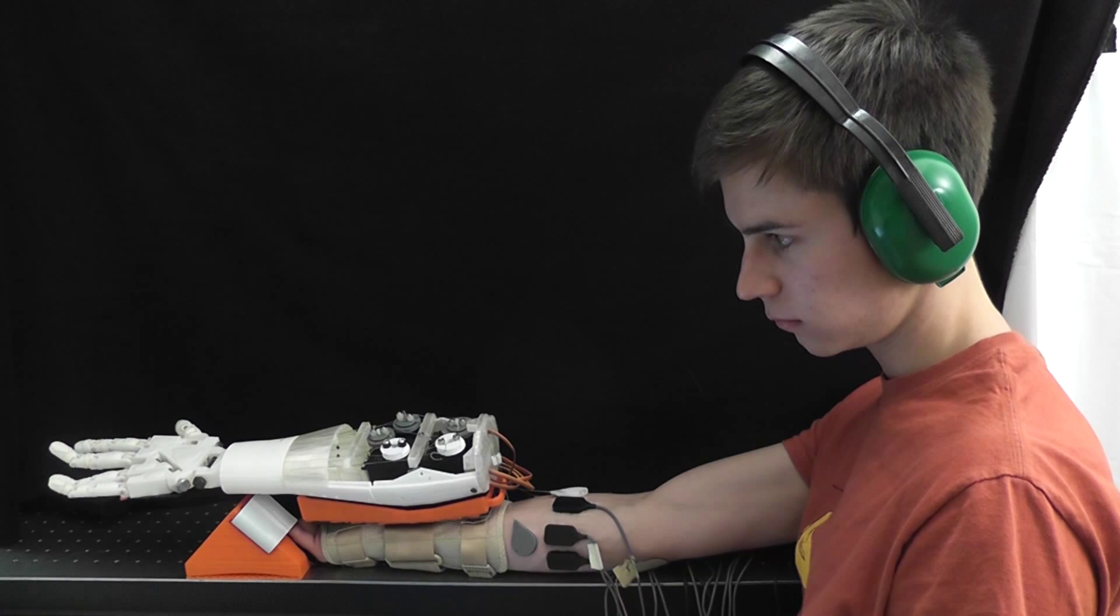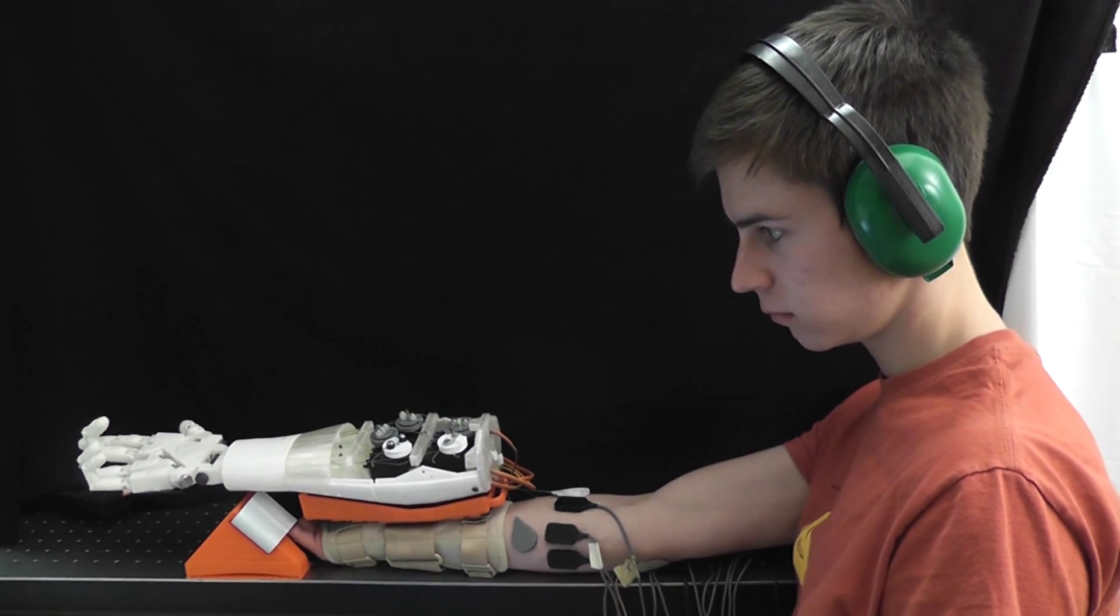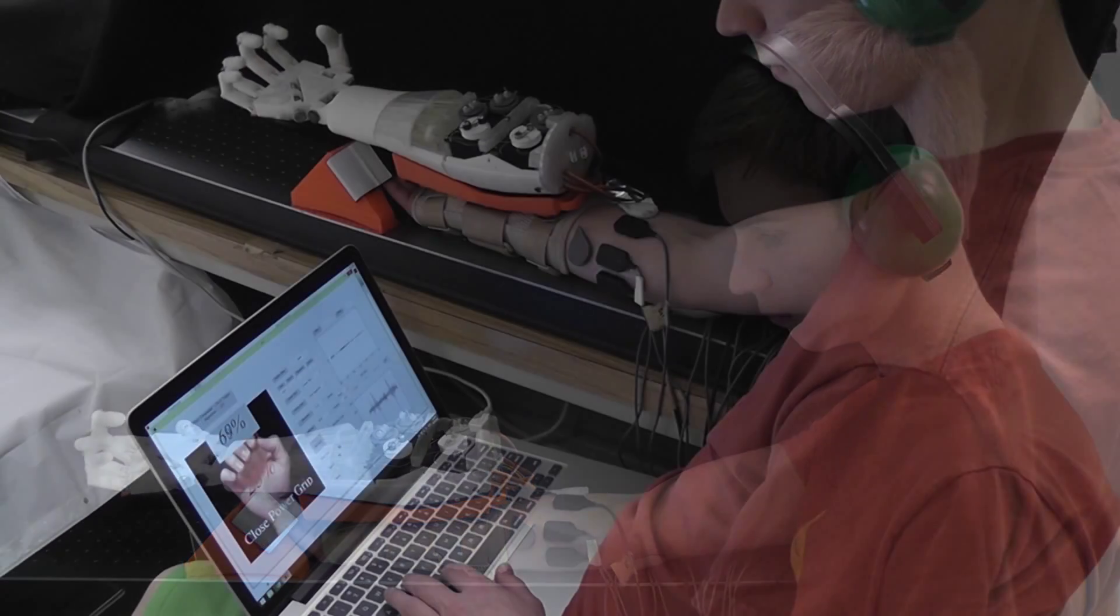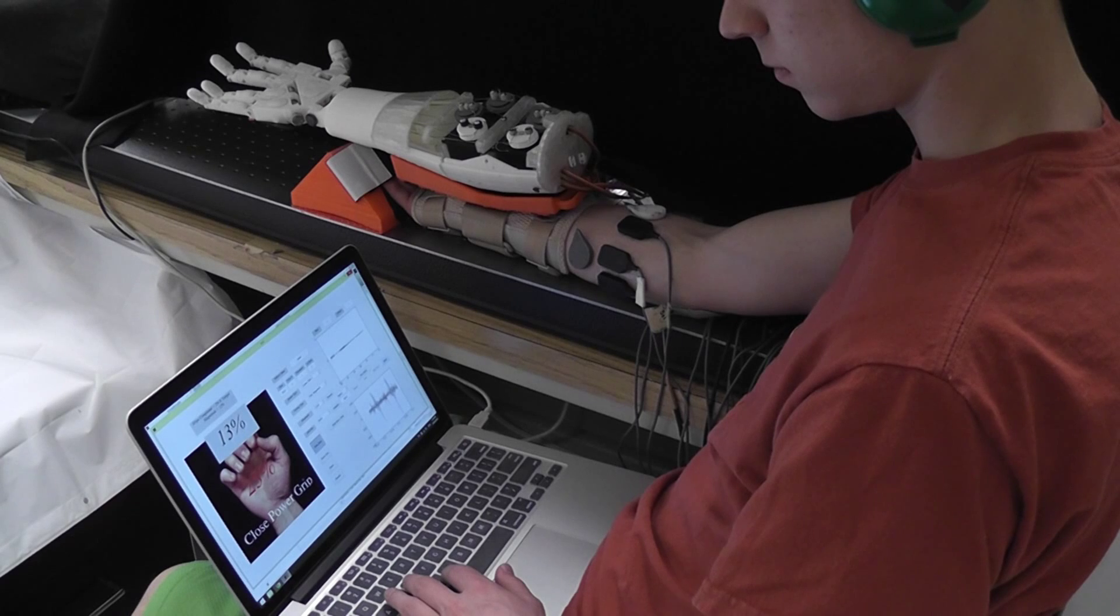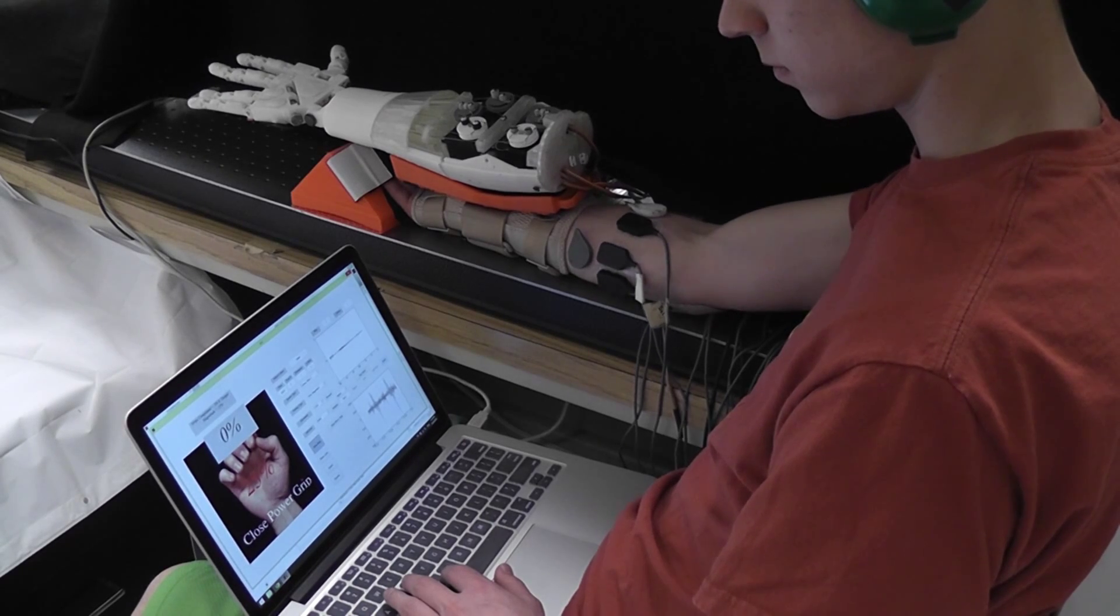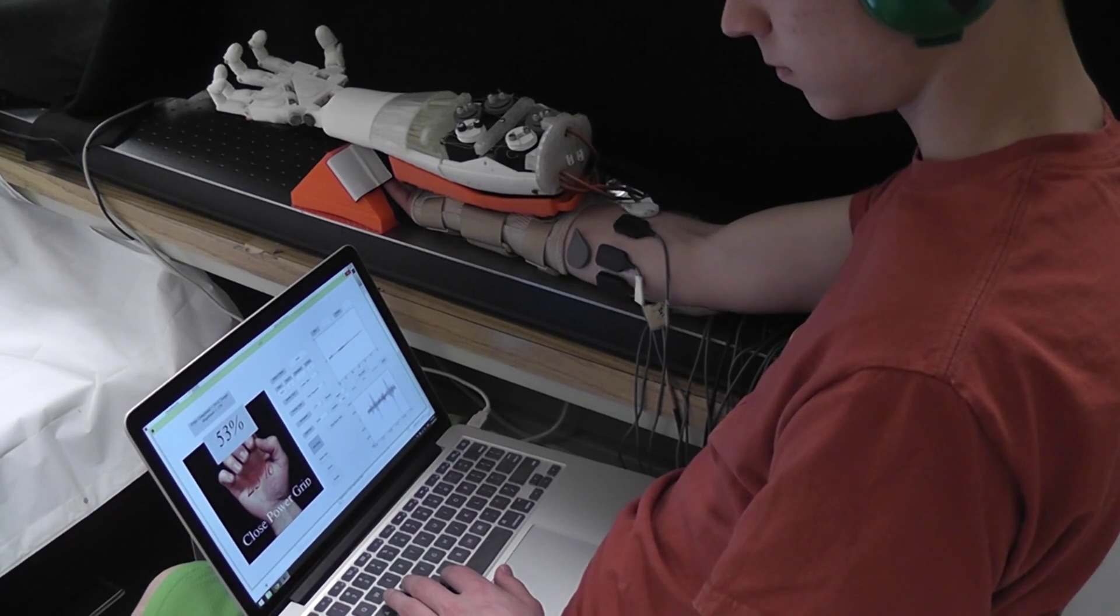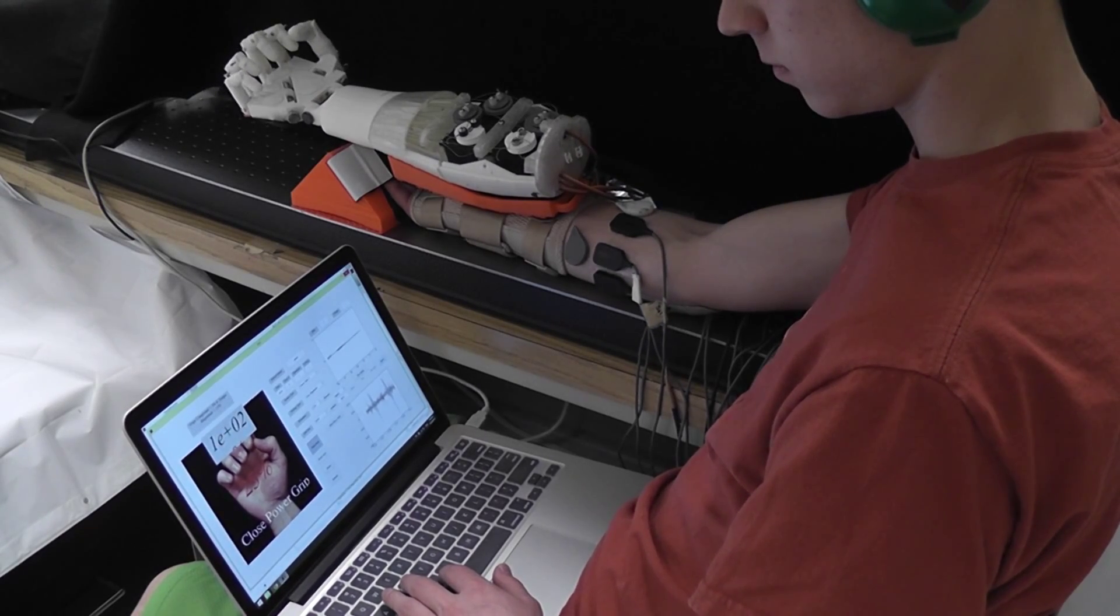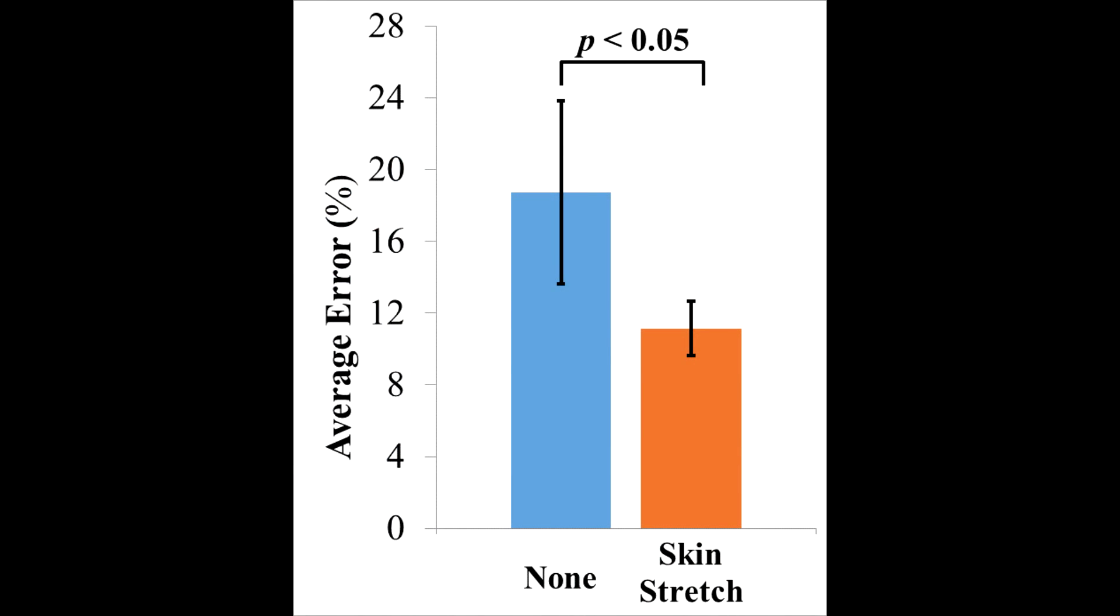In our final experiment, we asked subjects to match a particular grip aperture using EMG. Subjects were presented with either skin stretch feedback or no feedback at all. Here, you can see the subject controlling the aperture of a pre-selected grip to various percentages of closure. For 30 different combinations of the six grips and target apertures, the subjects matched the grip apertures with 11.1% error on average.